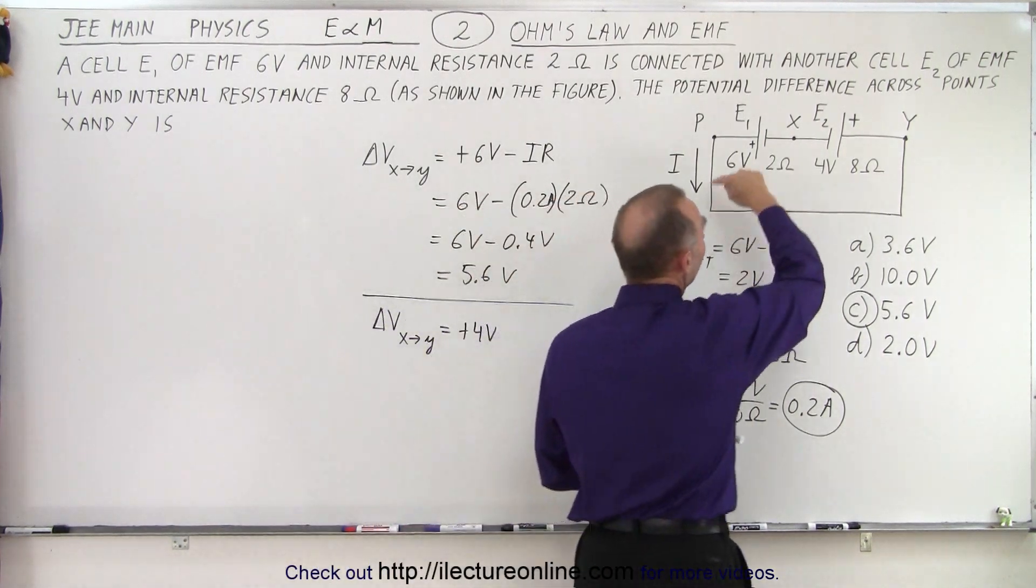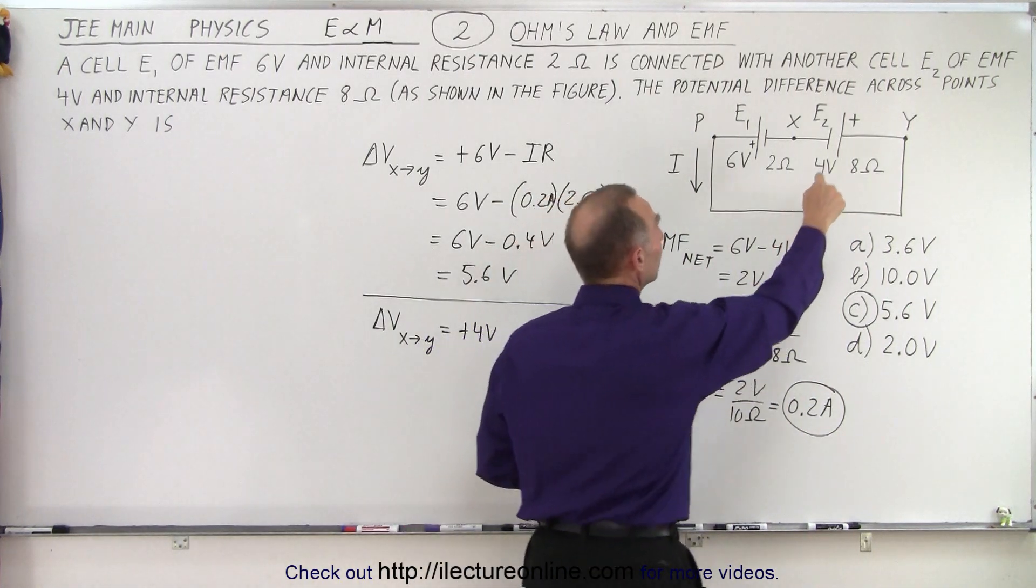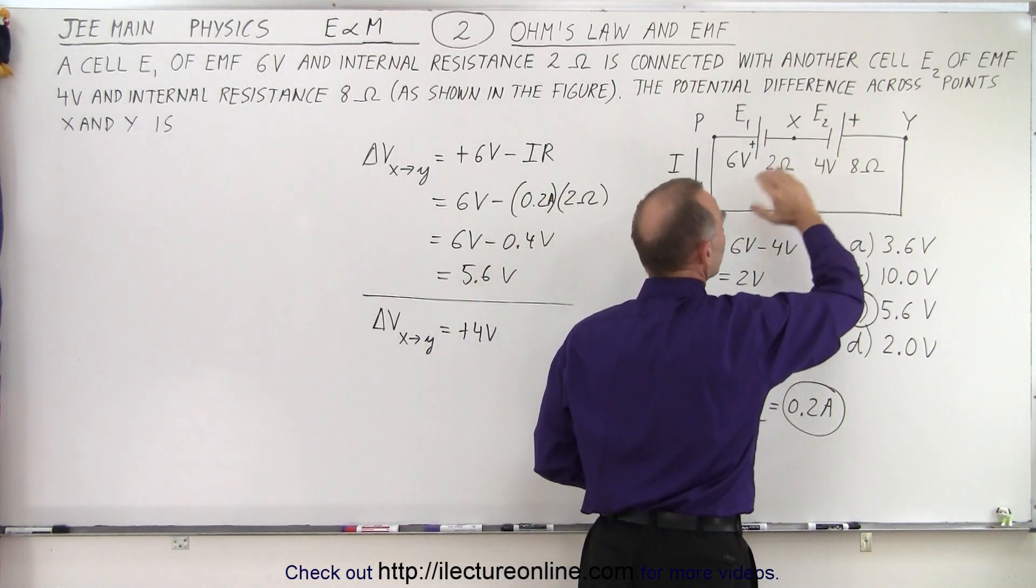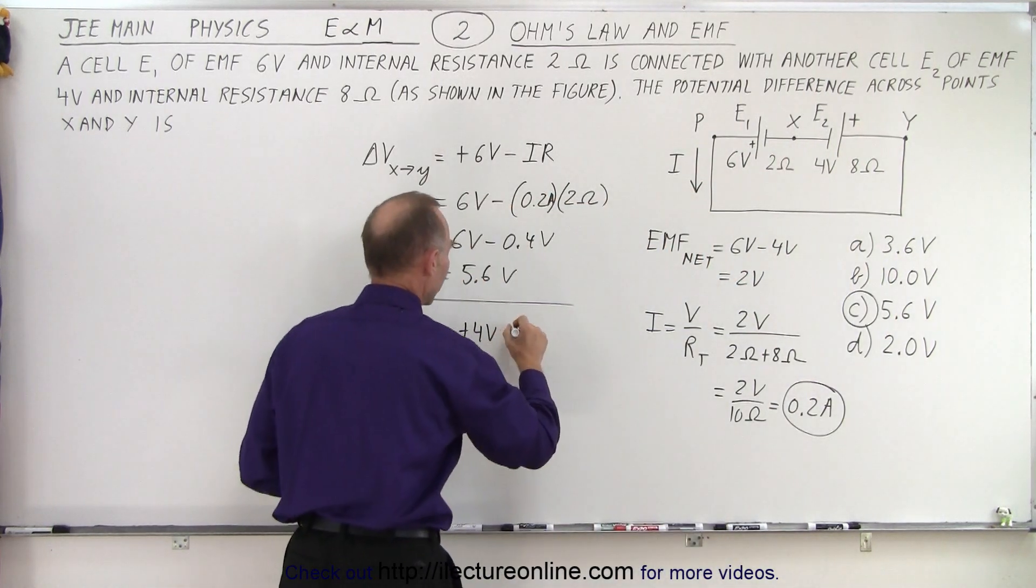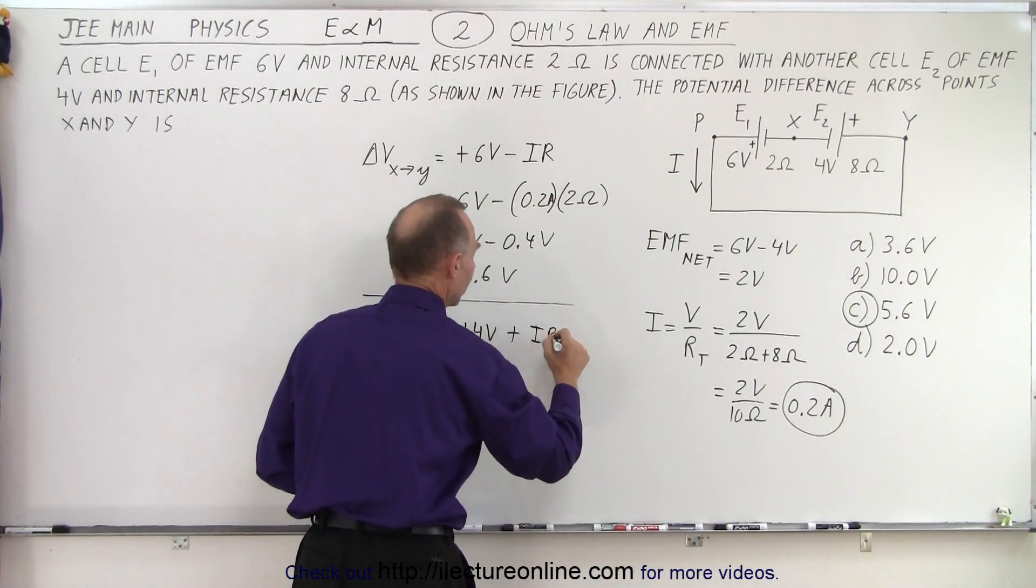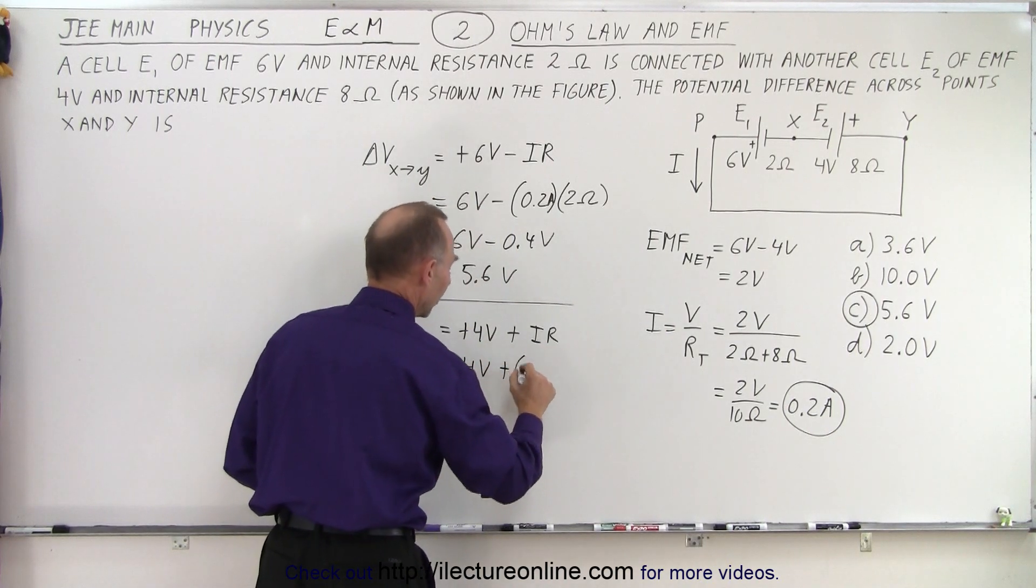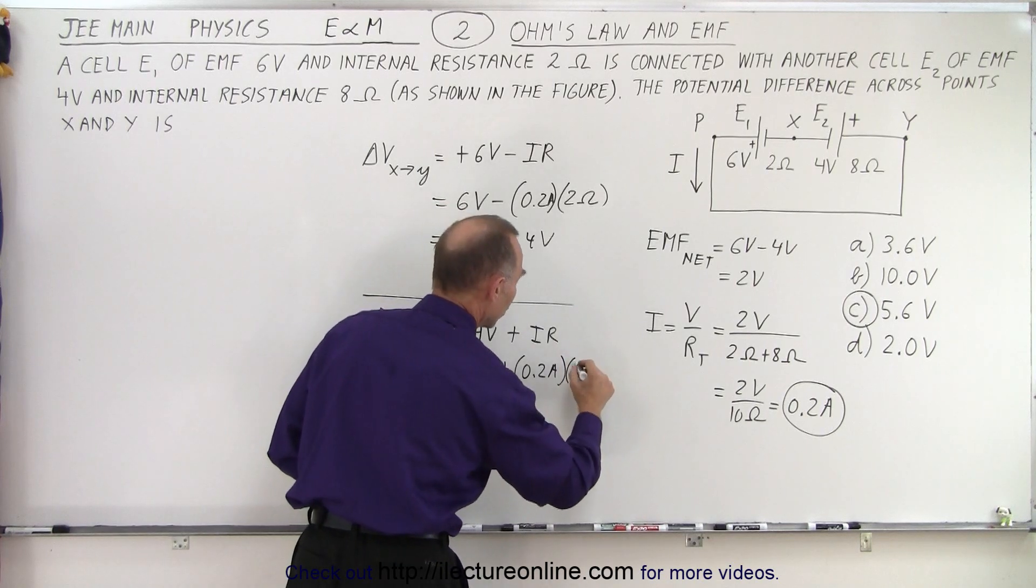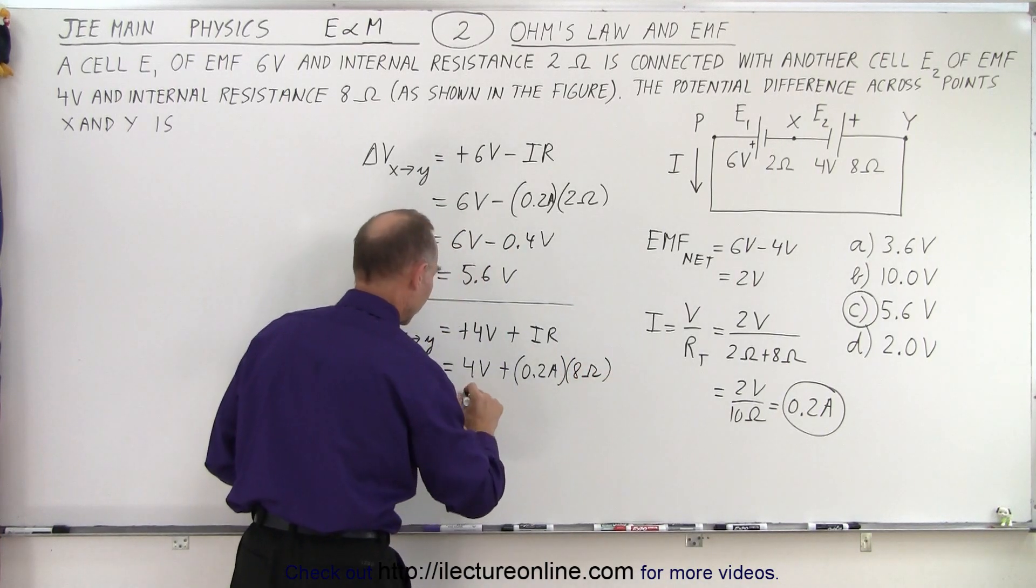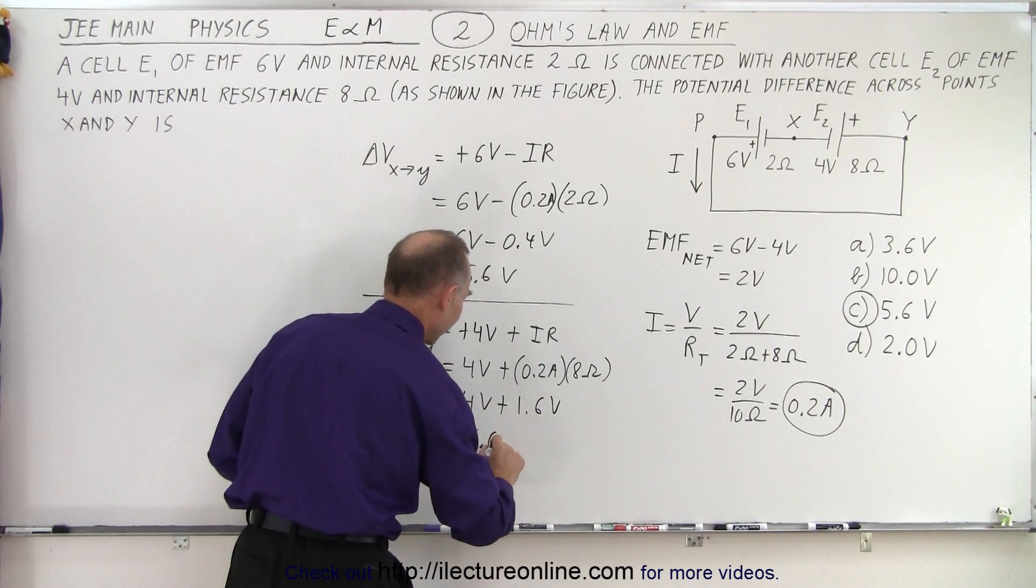Now notice that we're going in the opposite direction of the current, so instead of having a voltage drop due to the internal resistance we're going to have a voltage rise because we're going against the current. And so that would be plus I times R the internal resistance. In this case that is 4 volts plus the current of 0.2 amps and the total resistance of 8 ohms, so we get 4 volts plus 1.6 volts or again 5.6 volts.